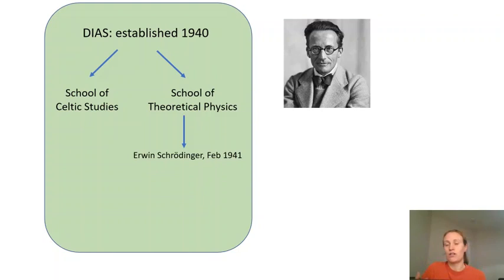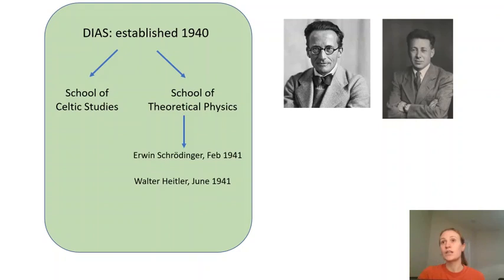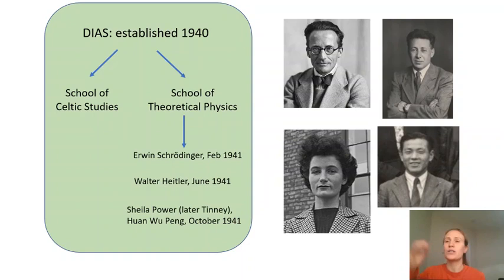So although he had this idea, de Valera, of setting up the Institute, really it happened so that this Nobel Prize winner, God of Physics, would come and move to Dublin and bring his brilliant mind with him. Having said that, more people did follow soon after. So later that year, a second scientist arrived from Germany. And then those two people were joined not long after by an Irish mathematician called Sheila Power and a Chinese physicist called Juan Wupeng. And together, this group of academics gave lectures and they were of a standard that hadn't been available previously in Ireland. And really, they together changed the face of physics in Ireland.